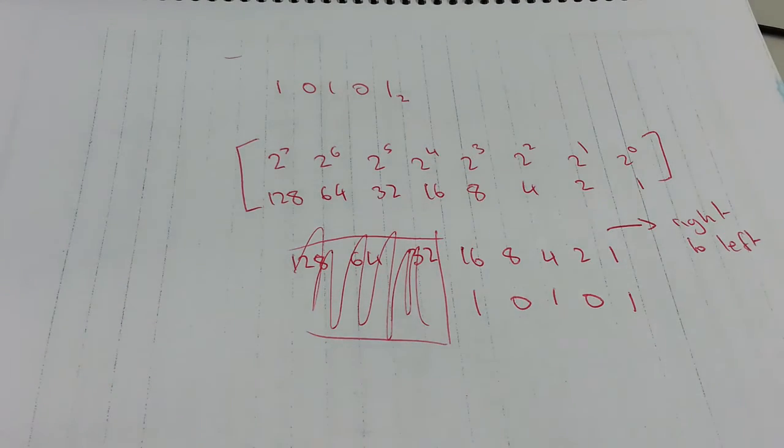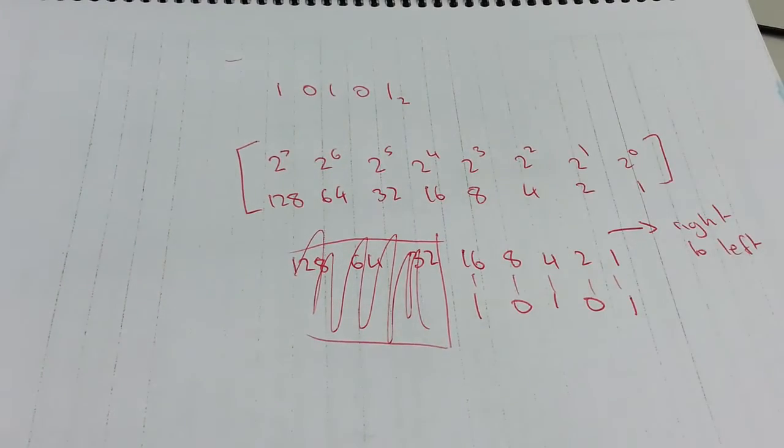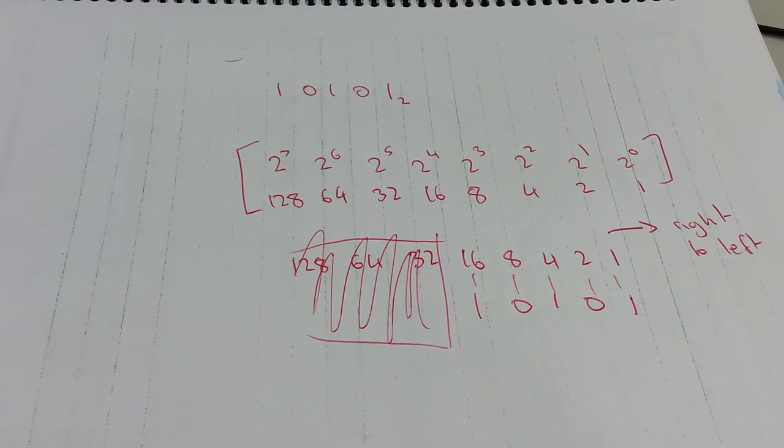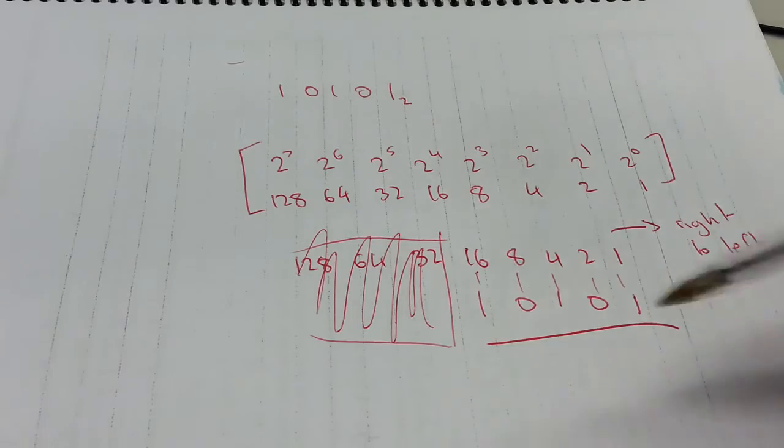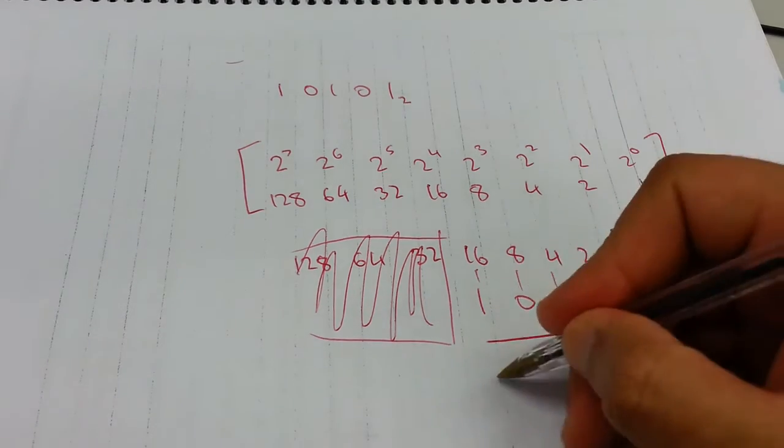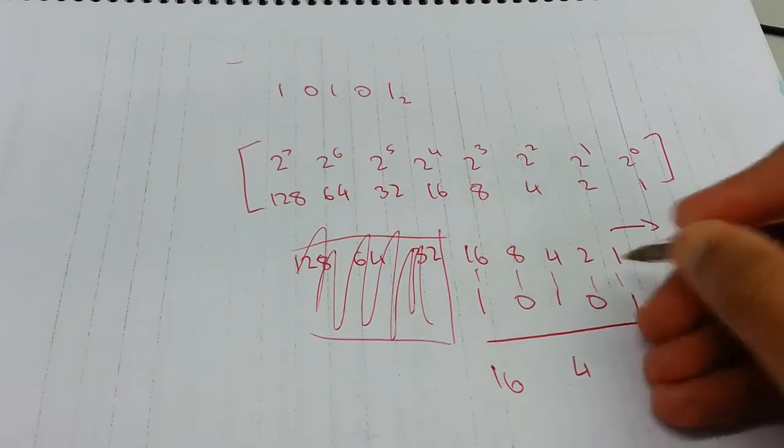Connect the digits in the binary number with the corresponding powers of 2. That's all you need to do. Now you need to make sure and show people or show yourself which ones you need to add up. So 16 has 1, 4 has 1, 1 has 1.